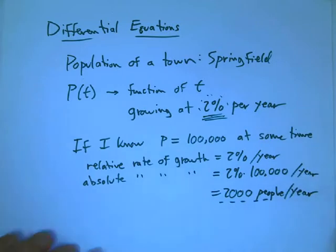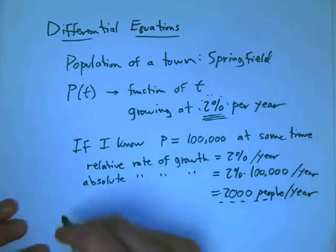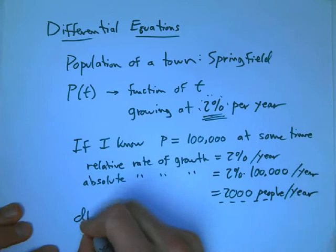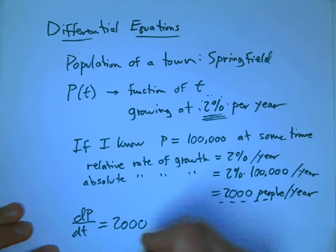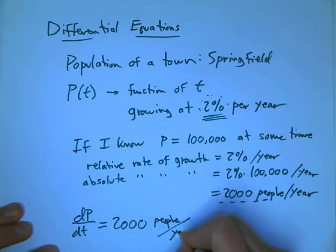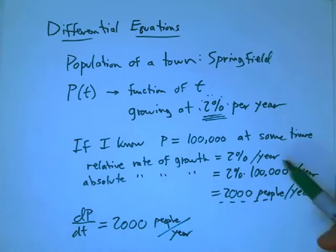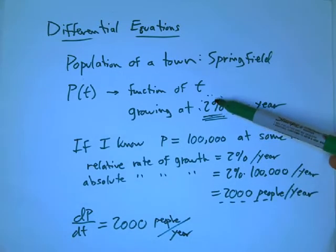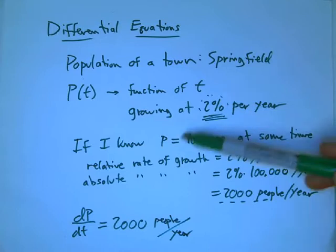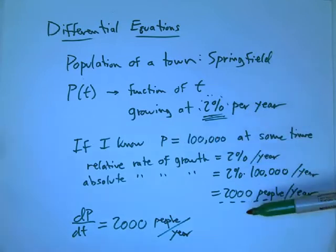So 2,000 people per year. That's the kind of growth rate we're more familiar with. That should say that the rate of change of the population with respect to time is 2,000 people per year. And in general, we can say that if we take that 2% and multiply it by whatever the population is, we're going to get the growth rate in terms of a derivative.